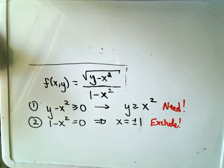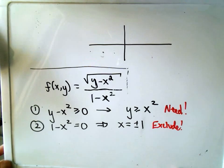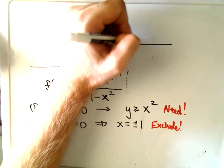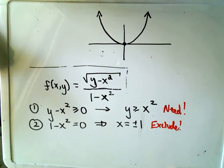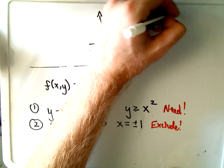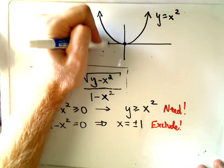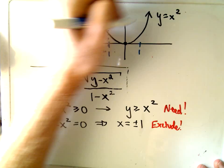So basically, if you wanted to sketch the domain of this function, it says y has to be greater than or equal to x squared. So this time we'll use a solid line. So there's the equation y equals x squared. We have to leave out the values x equals positive 1 and x equals negative 1. So x equals negative 1, x equals positive 1, we would have to leave those values out of the domain.